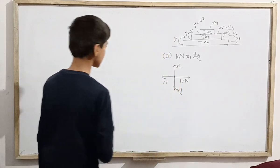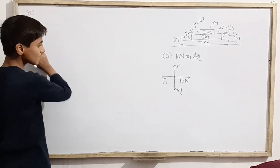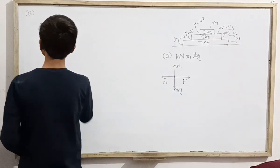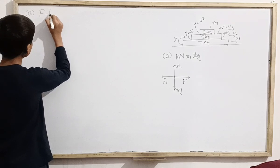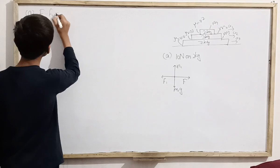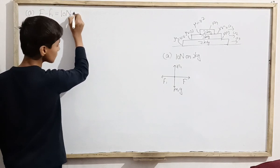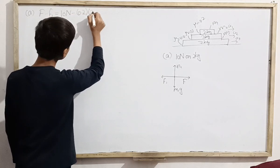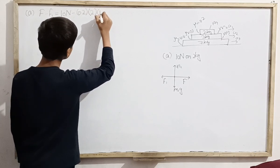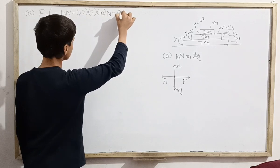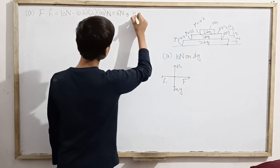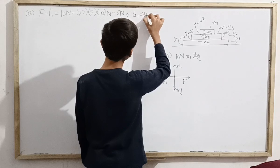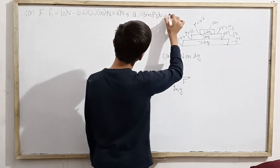This is the free body diagram. We can easily solve it. The net force is F minus f1 — that is 10 Newton minus f1. f1 equals mu1 times normal force, which is 0.2 times 2 times 10, giving 4 Newton. So net force is 10 minus 4 equals 6 Newton. A1 equals 6 Newton divided by 2 kilogram, that is 3 meter per second square. So A1 is easily found.